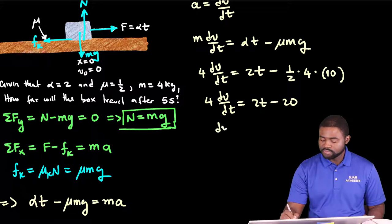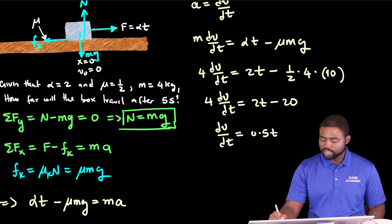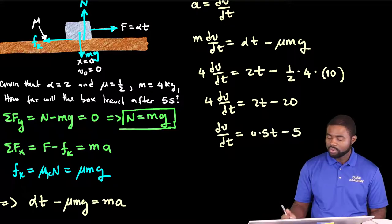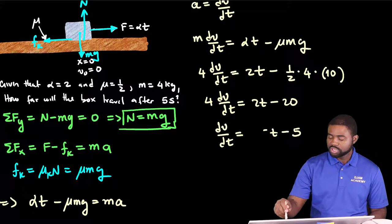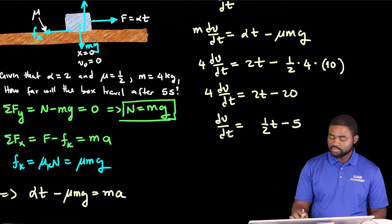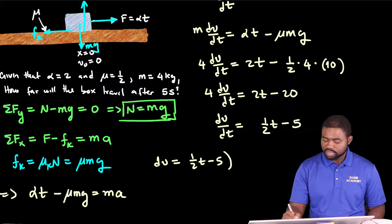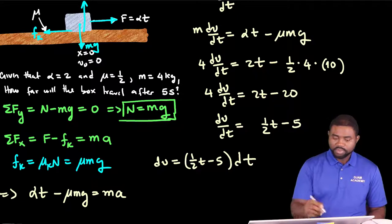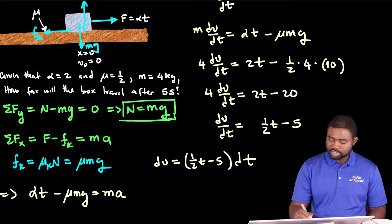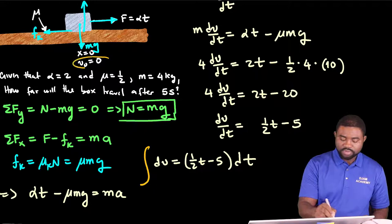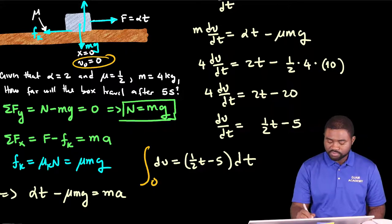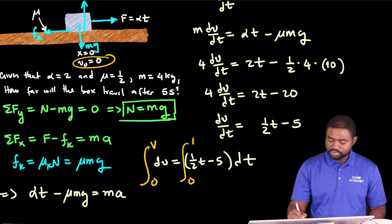Hence, we have Dv over Dt equal to 0.5T minus 5. Or, you can choose to use half minus 5. What that means is that Dv is equal to half T minus 5 multiplied by Dt.